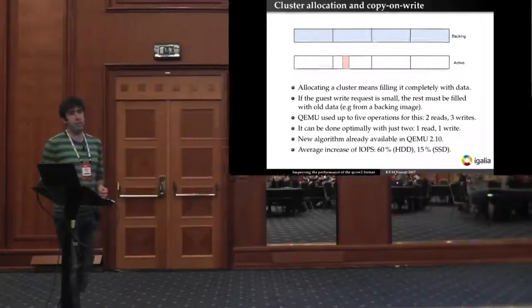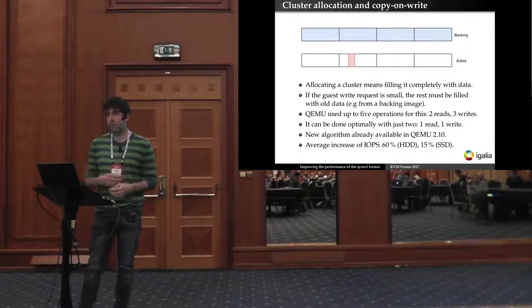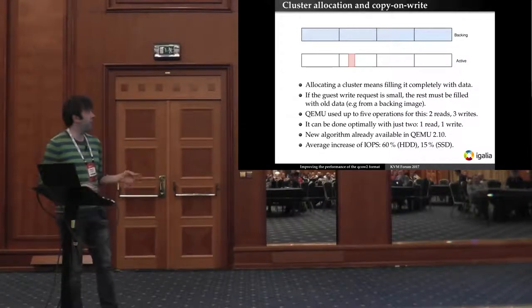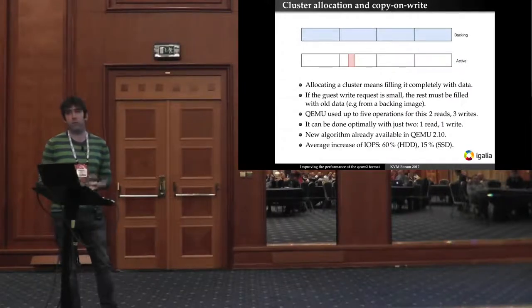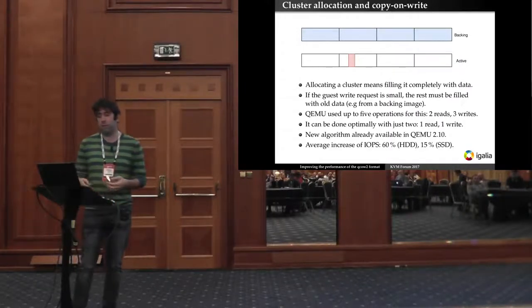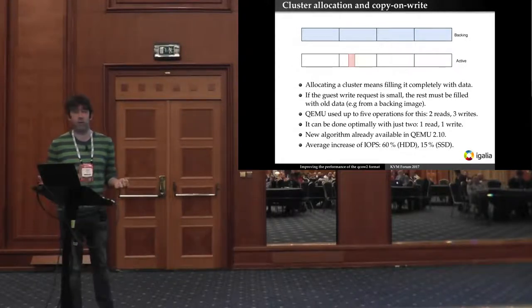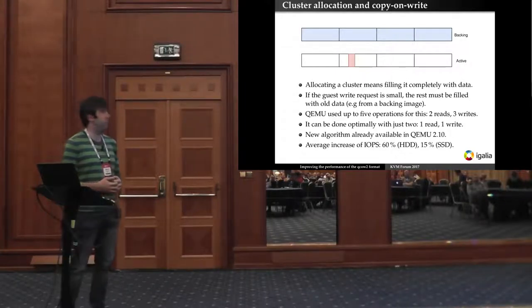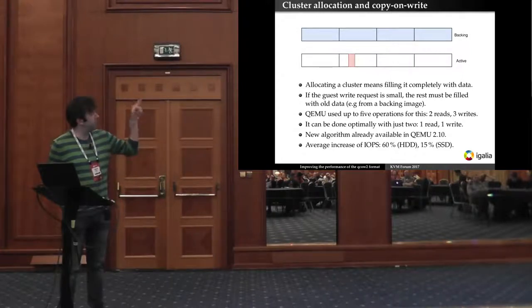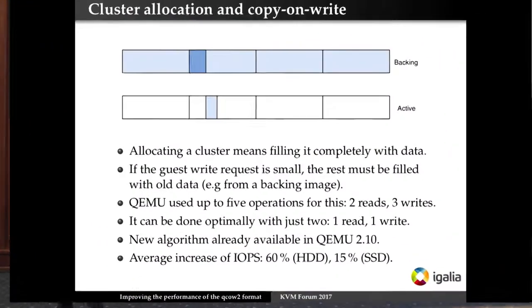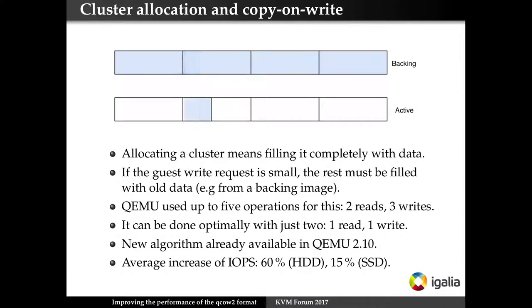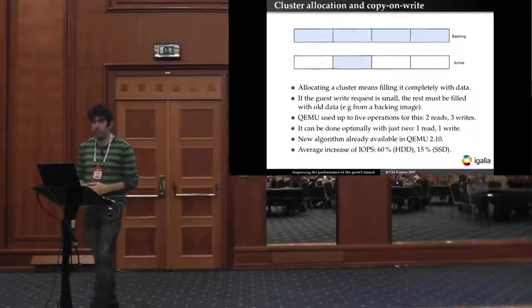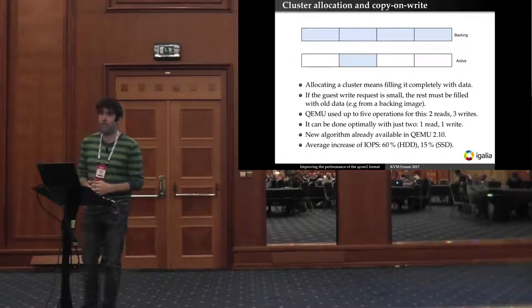So clusters are the smaller units of allocation. When you allocate a new cluster you have to fill it with data. So for example if you're writing in the red region over there you have to fill the rest of the cluster with the data that was there before. There was no data you had to go either to the backing file or fill it with zeros if there was no backing file. So in this case what the basic algorithm and what QEMU was doing is it first writes into the red region, then it reads the region immediately before from the backing file, then it writes that, then it reads the region afterwards and then it writes it. That's a total of five operations and as you can imagine that's not a very optimal way of doing it.